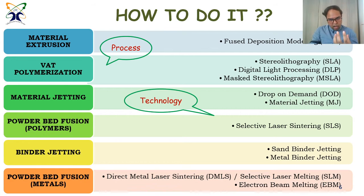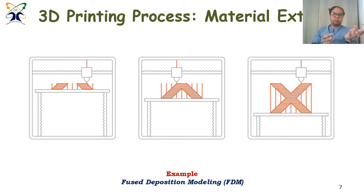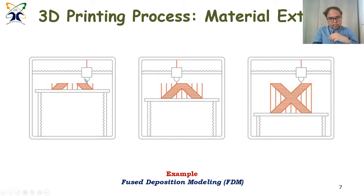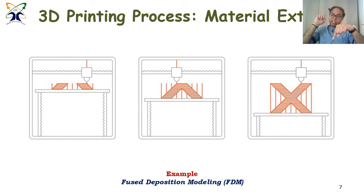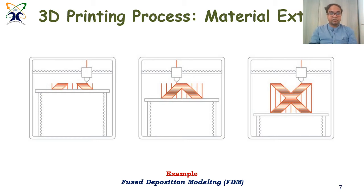Let's discuss how we basically do it. For material extrusion, you take a thermoplastic material — a plastic that you can heat until it becomes waxy. You have a heated nozzle, you pour the plastic material through it, and it follows the grid design which you have already given in your 3D software. This is how you receive a 3D printed object using the material extrusion process. One example of this is Fused Deposition Modeling, FDM.